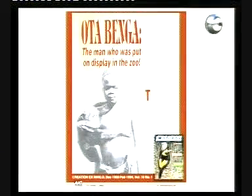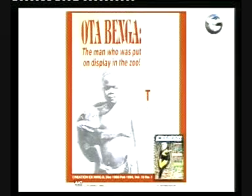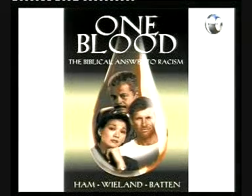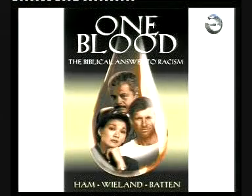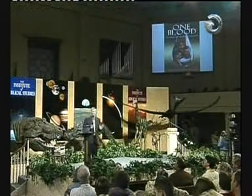In 1904, Ota Benga, a pygmy from South Africa, was brought to America for the World's Fair. Instead of returning him home, the explorer and the director of the Bronx Zoo — because of their belief in evolution — put Ota Benga in a cage with an orangutan, called 'the monkey cage.' It became the most popular exhibit at the Bronx Zoo, and Americans lined up on weekends to show their children the supposed relationship between the pygmy and the orangutan. Think about what that was doing to children's thinking in America.